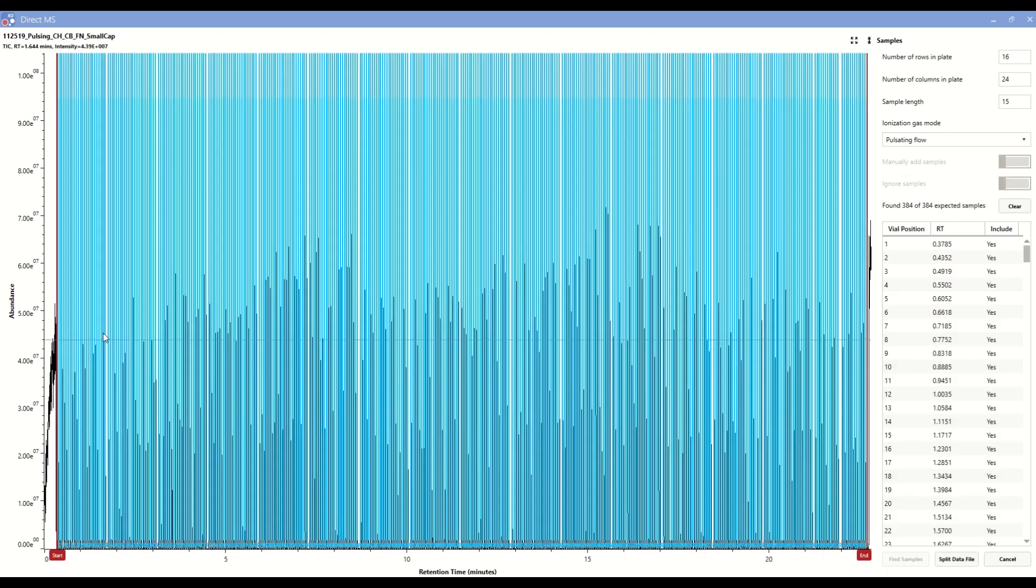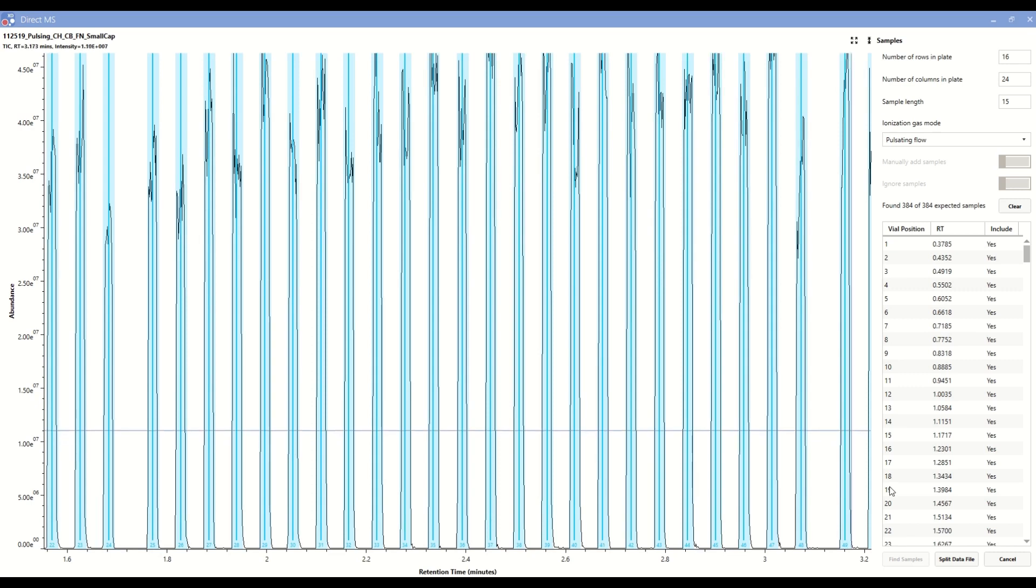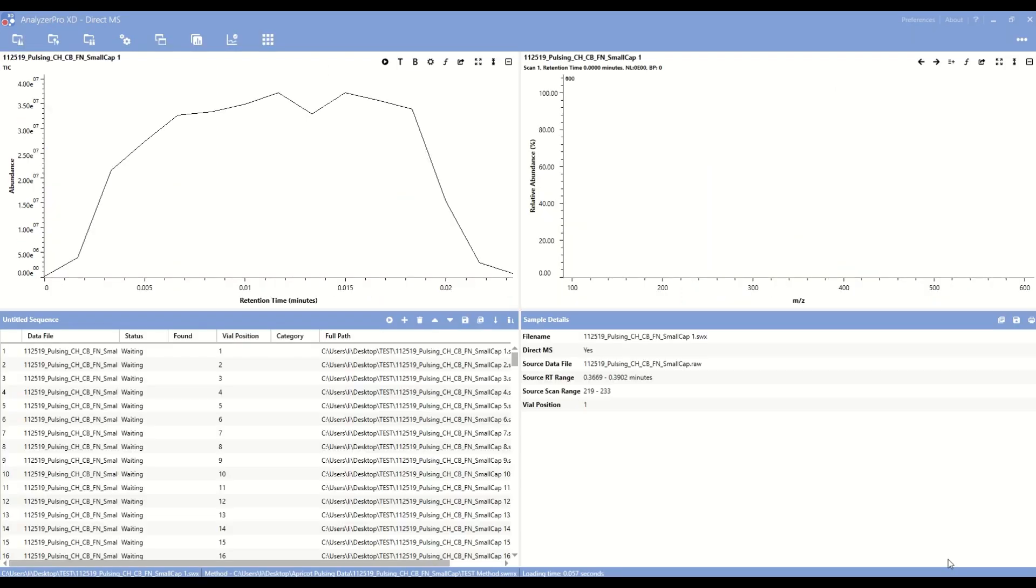Automatic peak detection immediately identifies all 384 peaks and will parse each sample into separate data files. Once the data files are parsed, they can be quickly processed and further interrogated.